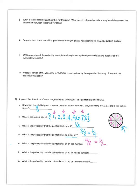What is the probability that the pointer lands on a 3 or an odd number? Well, 3 is an odd number. So we're doing the OR, which sticks with the 4 eighths — that's 1 half.